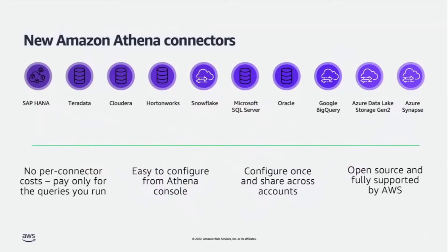New connectors include SAP HANA, Teradata, Snowflake, SQL Server, Oracle, and BigQuery. These connectors are developed, open sourced, and fully supported by AWS. There is no cost to using these connectors. They also support repeat use by allowing cross-account sharing between teams.